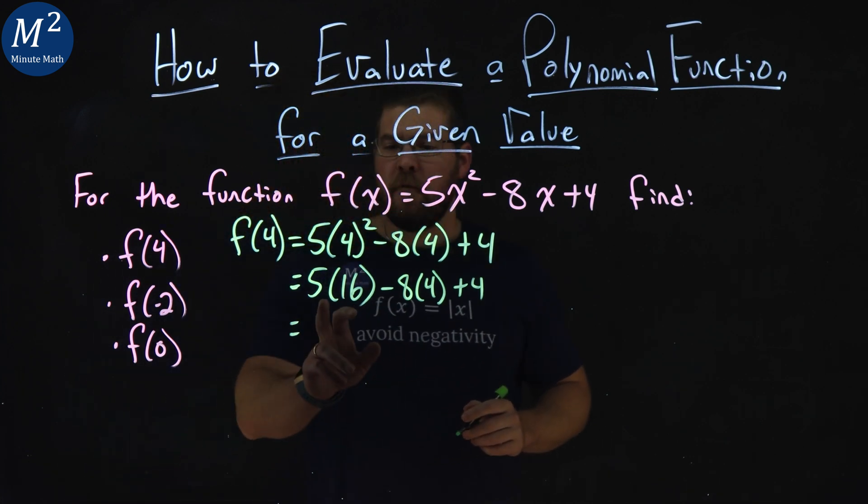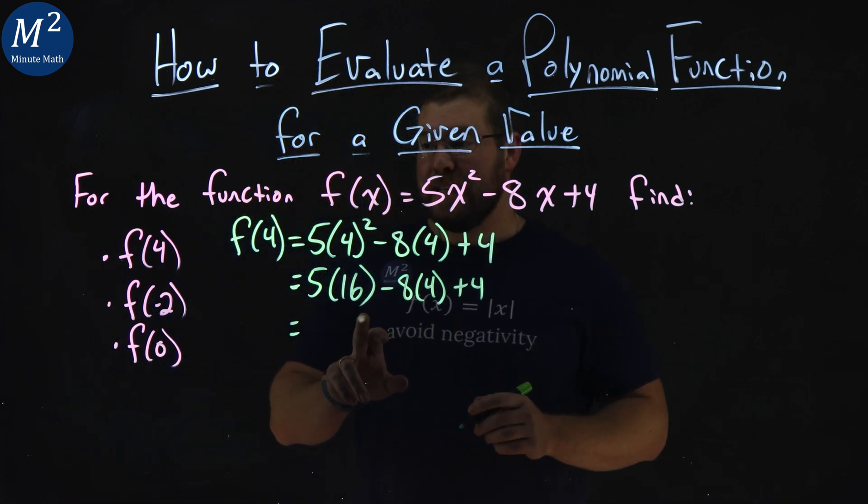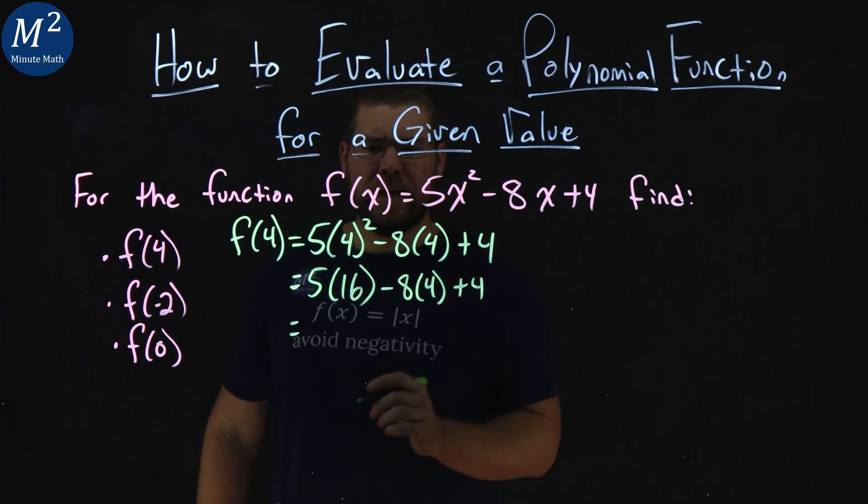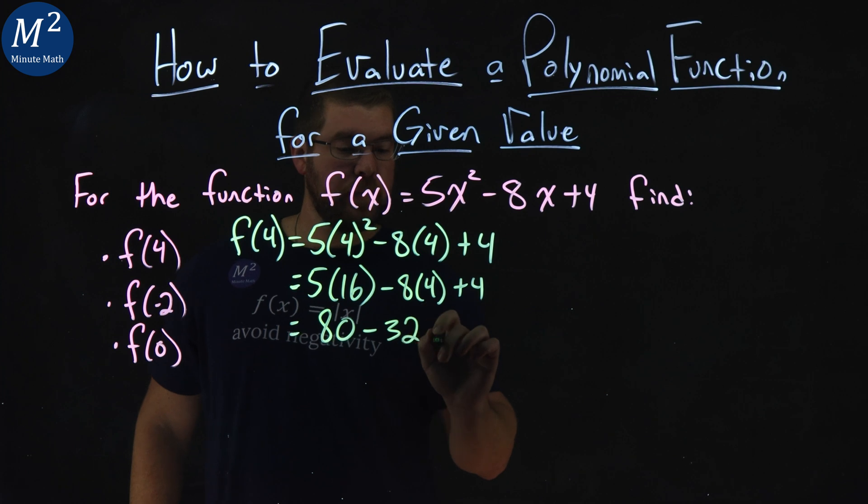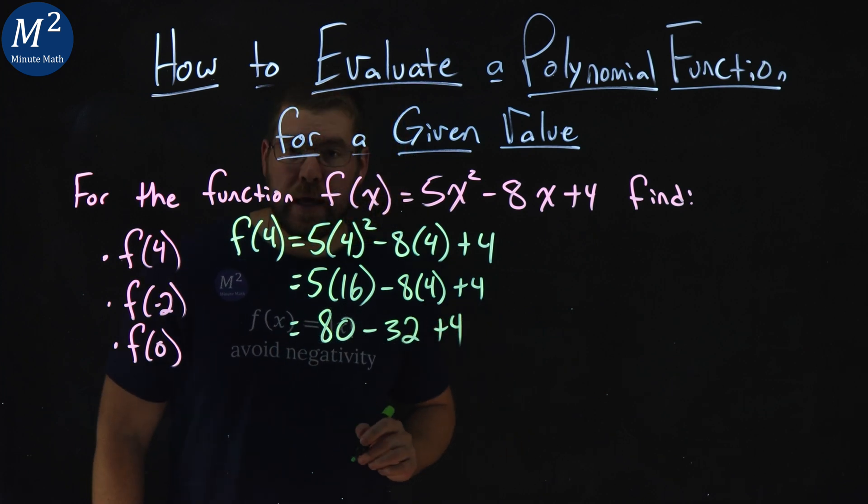From there, 5 times 16. Well, 5 times 16 is 80 minus 8 times 4 is 32, and we add 4 to that.